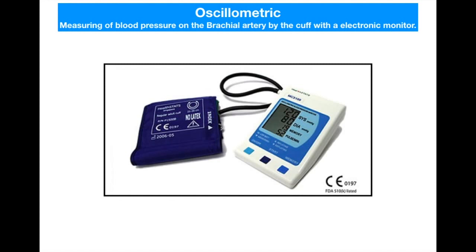The oscillometric method measures blood pressure on the brachial artery using the cuff with an electronic monitor only — no stethoscope is needed. It is the simplest and most digital type of blood pressure measurement, based on detecting oscillations in the cuff pressure.